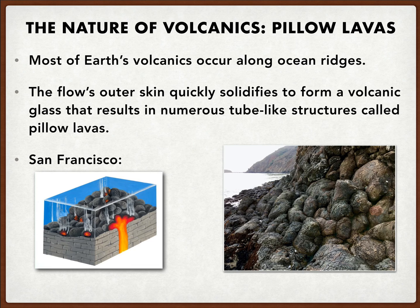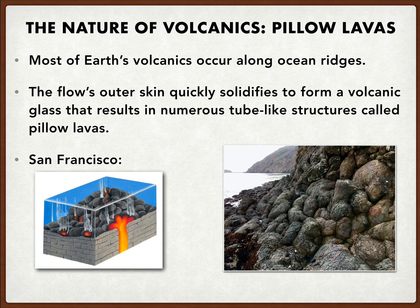Pillow lavas are also a very different type of feature that we can identify on the surface. Most of the Earth's volcanics occur along ocean ridges. We can actually find pillow lavas somewhere else, like in the middle of a different state, which then would help us assume that when they were deposited, they must have been near a margin of some sort with water. As the material flows out, it quickly solidifies because the water's cold, forming this volcanic glass that results in numerous tube-like structures called pillow lavas — it kind of looks like a bunch of boba that's merged together. We actually have examples of this in several parts of California, including one from San Francisco.